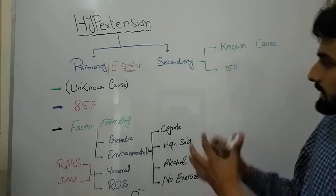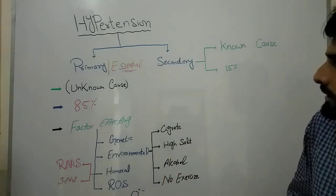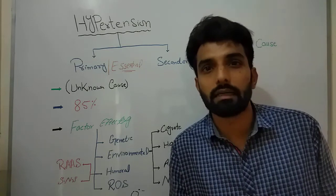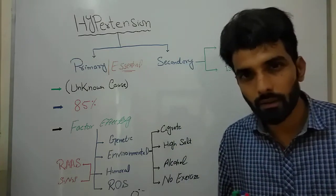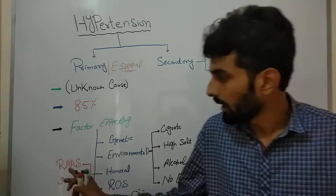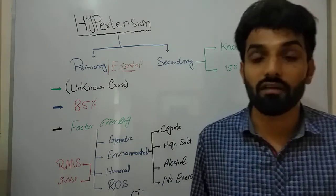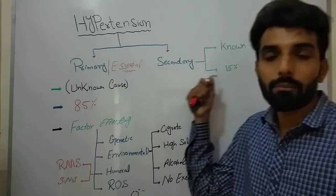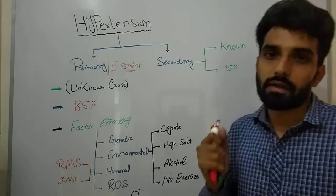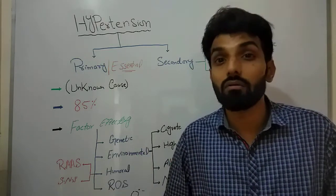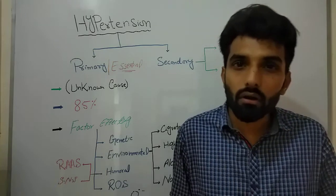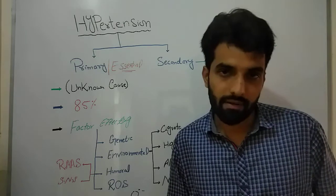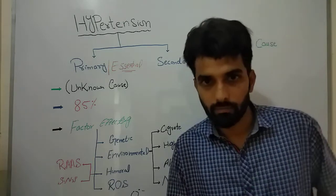That was a brief introduction to the types of hypertension. Now we will discuss the pathophysiology of primary hypertension, focusing on over-activation of the renin-angiotensin system and over-activation of the sympathetic nervous system. In the next part, we will cover the pathophysiology of secondary hypertension — how kidney disease, neural disease, pulmonary disease, and thyroid disorders can ultimately lead to hypertension. Please stay with me. Thank you.